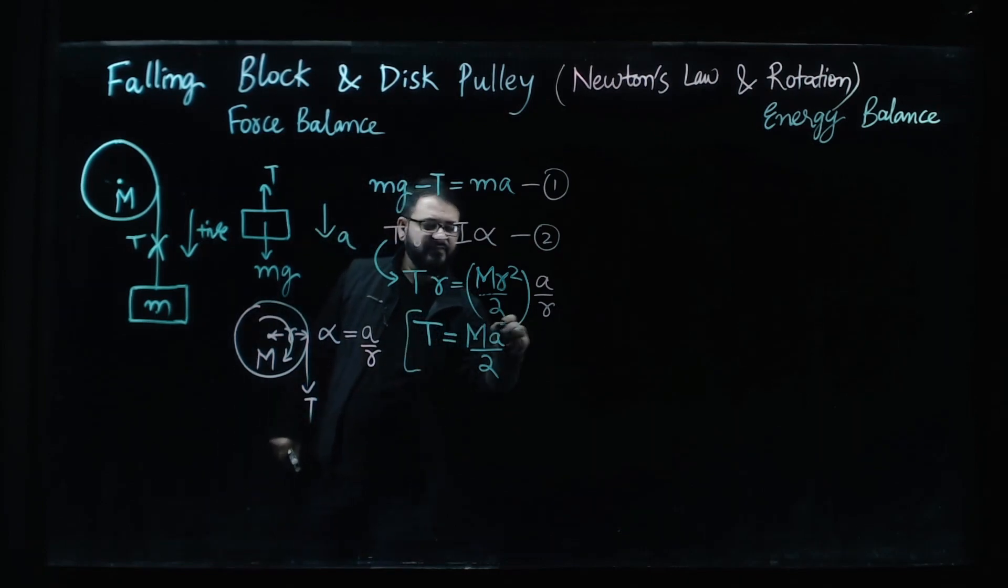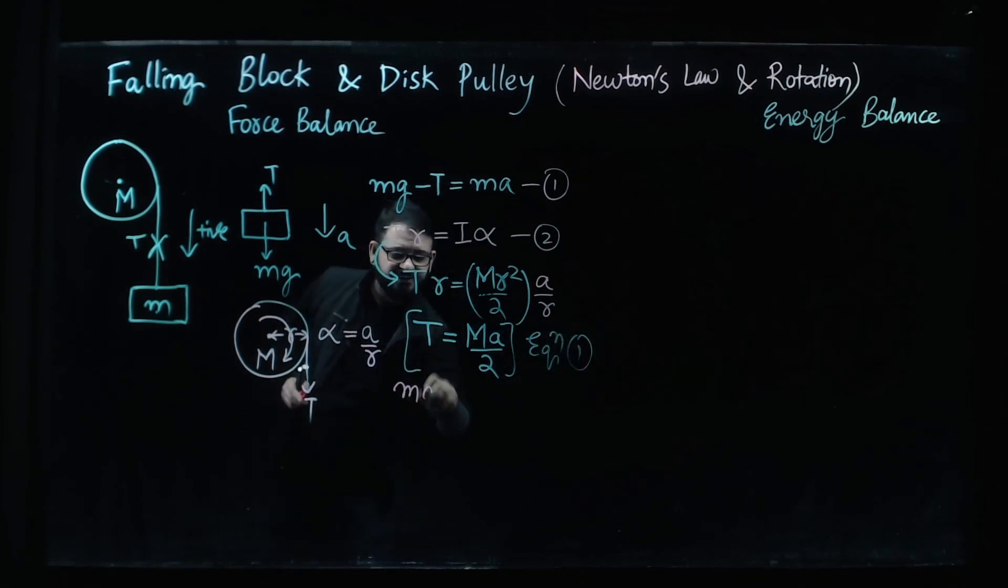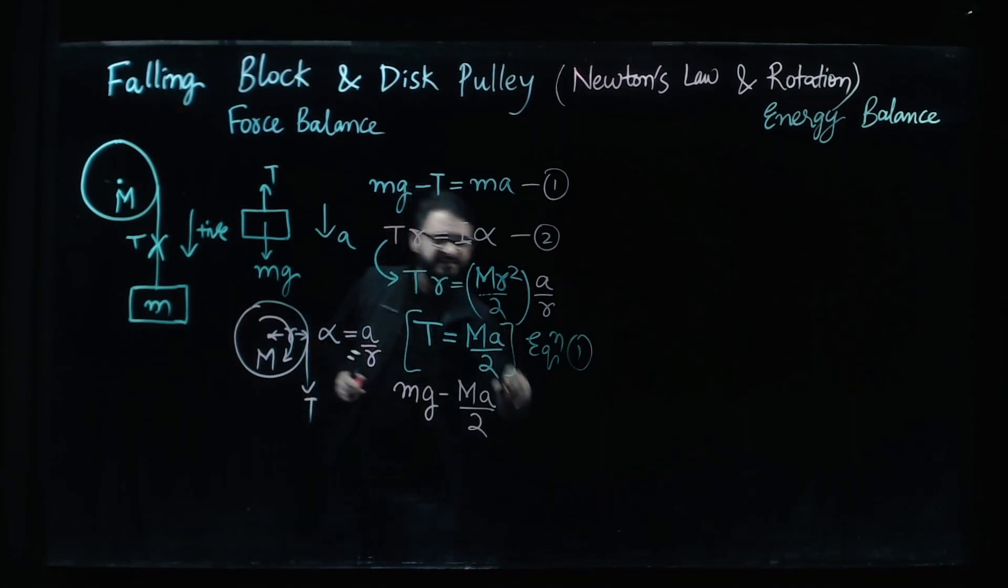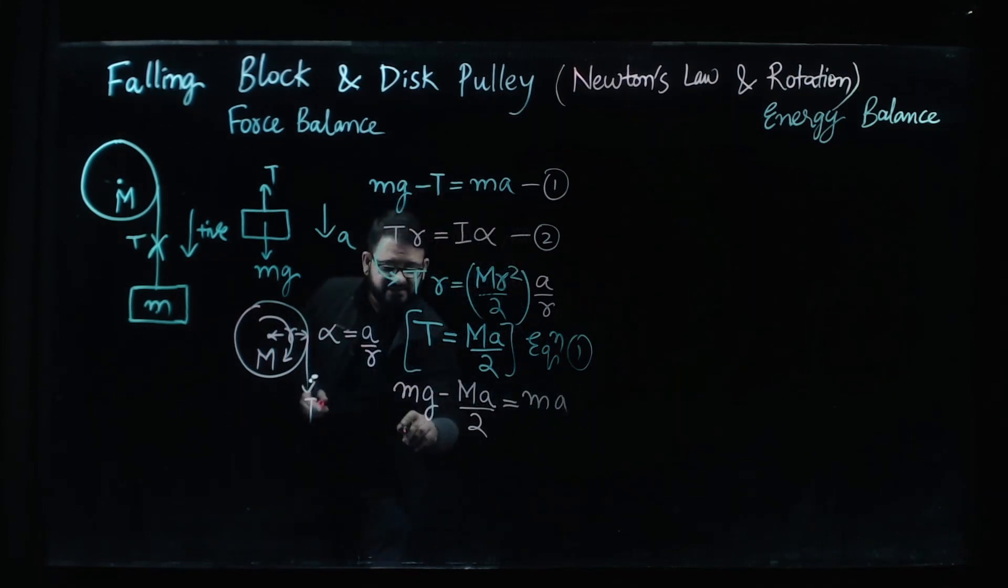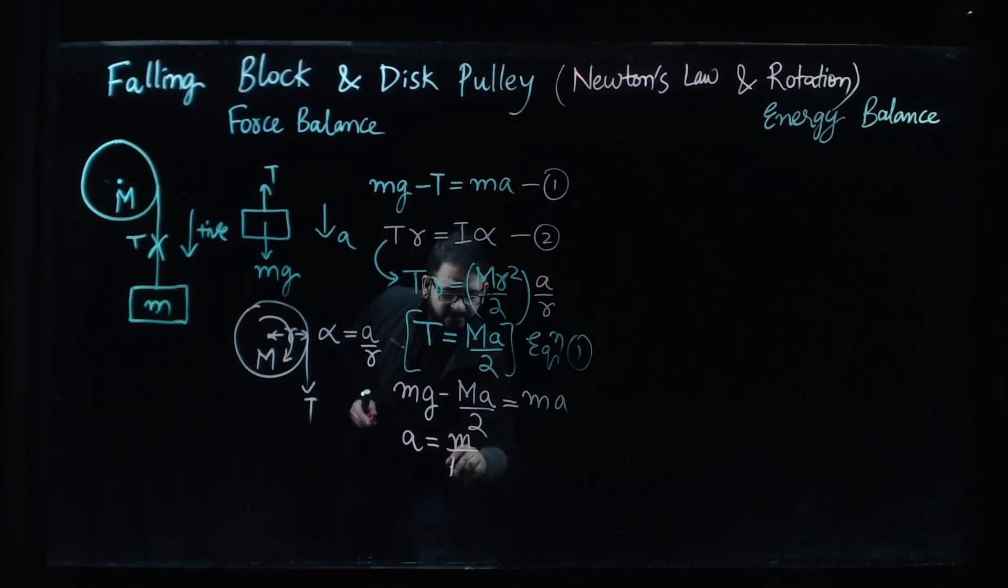Now let's plug in this value inside equation 1. MG minus MA by 2 and this is equal to MA. So from this we can clearly see A is equal to M divided by M plus M by 2 multiplied with G.